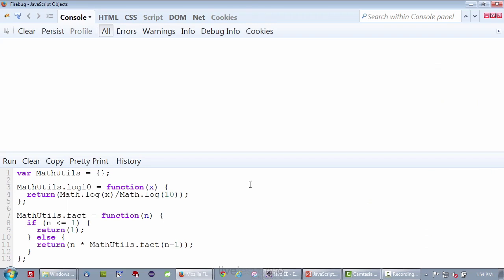Okay, let's just make some function calls to illustrate what I mean. So to recap, I make a variable called MathUtils, and it's just an empty object. And then I take my functions, in this case, log10 and fact, and I stick them inside the MathUtils object as properties.